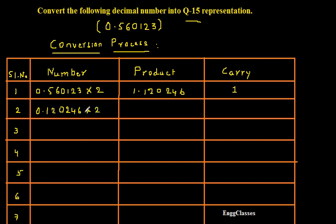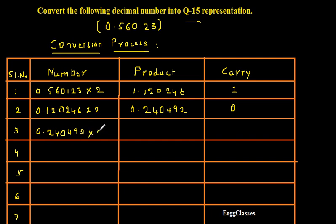I would multiply 0.120246 again by 2 and I am going to get 0.240492. The carry is 0, and the number I am left with is 0.240492. I would multiply this number again by 2 and I am going to get 0.480984. The integer part is 0, so I would consider this as the carry, and the next number would be 0.480984.